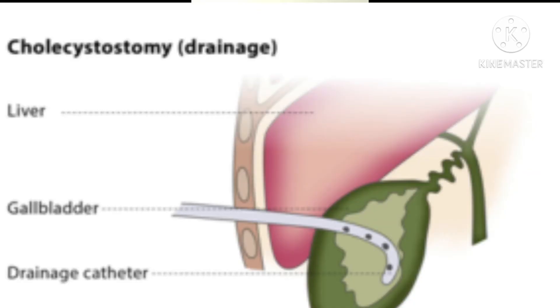What you do is, under ultrasound-guided or CT scan guidance, you introduce a tube from outside the abdomen into the gallbladder. This tube goes into the gallbladder and is connected to a collecting bag. The reason for this cholecystostomy tube is that there is toxic fluid inside the gallbladder and we want this toxic fluid to come out. The patient is put on IV antibiotics and most of the time patients improve with these conservative measures.